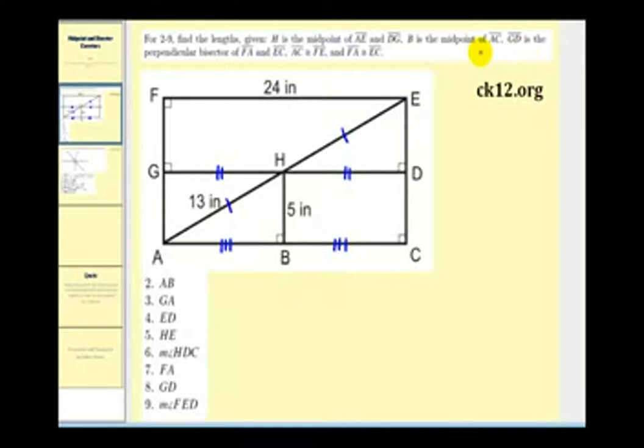GD is the perpendicular bisector of FA and EC. Here's GD and here's FA. So if it's a perpendicular bisector we know that segment FG has the same length as segment GA, and GD is also the perpendicular bisector of EC.